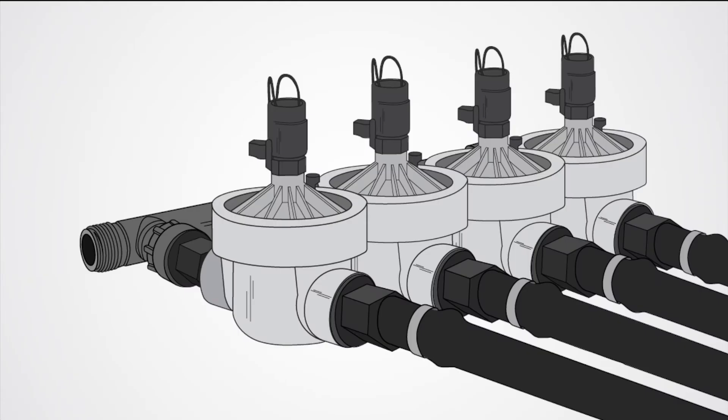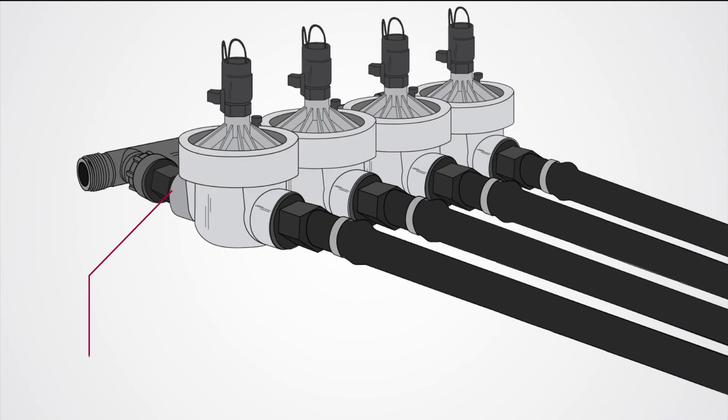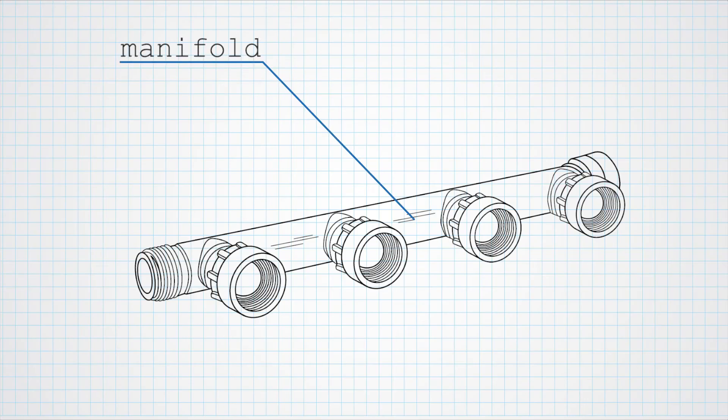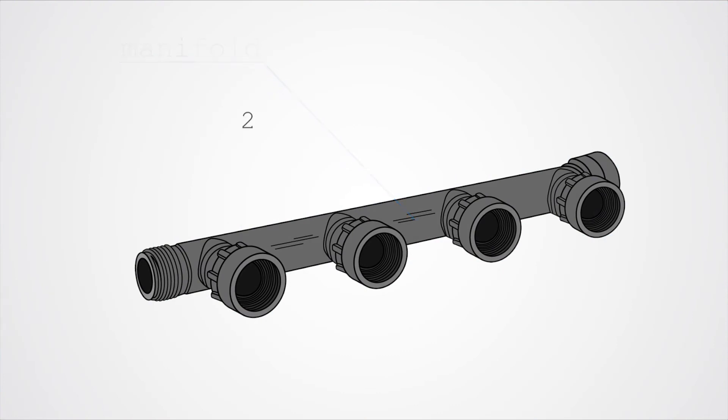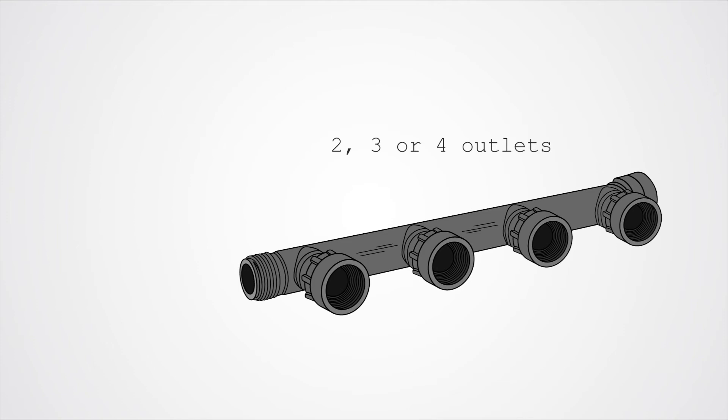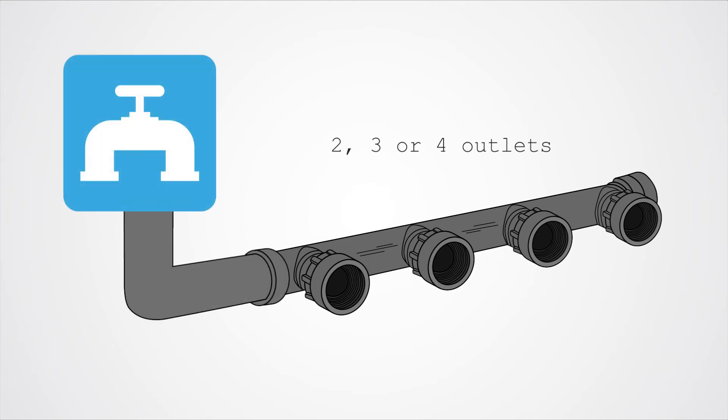The number of solenoids you need depends on the size of the system and how many zones you want to water at the same time. The manifold houses your solenoid valves. It has two, three or four outlets and acts as the middleman between your water source and irrigation system.